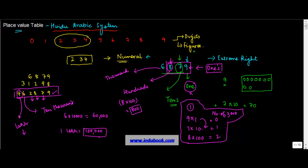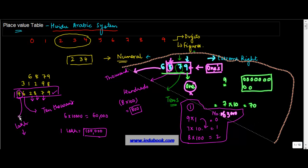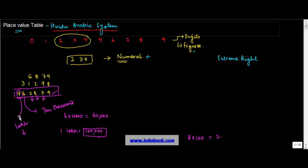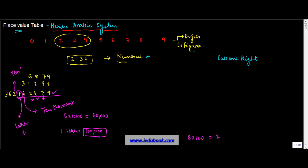After 10,000, the next place is lakh. So this is 4 lakh. 1 lakh is equal to 100,000 — this is used in the Hindu-Arabic Indian system. If the digit were 2 in that place, it would be 20,000. Now for even bigger numbers: before 4, if we had 2, 6, 3 — this next position represents 10 lakh.